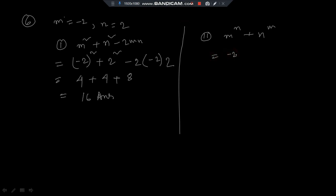m ka value minus 2, n ka value 2, plus n ka value 2, n ka value minus 2. Minus 2 square minus 2 into minus 2. Minus minus plus ho gaya 4. But yaha kya dekho, 1 by 2 to the power 2.